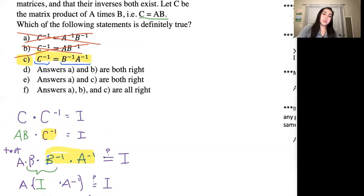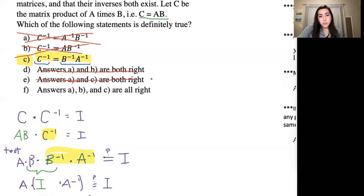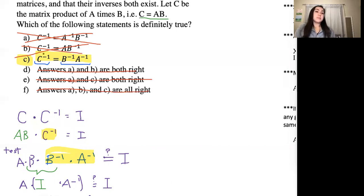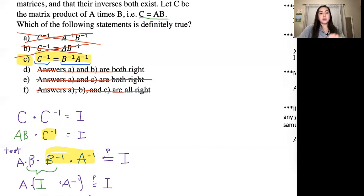The answer is option C. Option D says A and B are both right — they're both wrong. Option E says A and C are both right — C is right but A is not, so they're not both right. Option F says A, B, and C are all right — A and B are not, so that's not correct either. What you could have done is after testing A and B and finding both wrong, cross out D, E, and F, and you're left with C. But it is good to come down and verify that C is true.